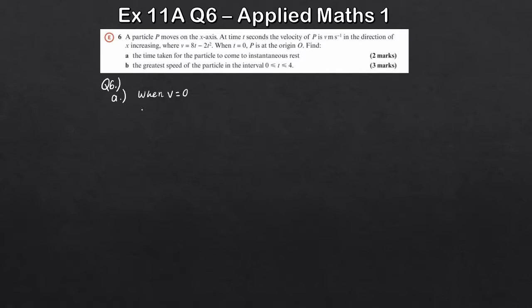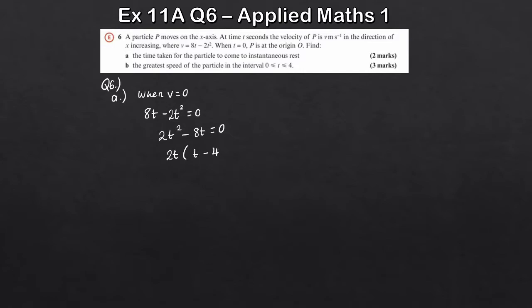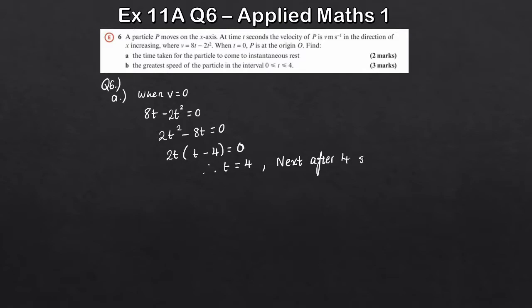So v is 8t minus 2t squared. Setting that equal to zero: 8t minus 2t squared equals zero. Factoring out 2t gives 2t(t minus 4) equals zero. Solving this, we get either t equals zero or t equals four. The one we want is t equals four — so the particle next comes to instantaneous rest after four seconds.